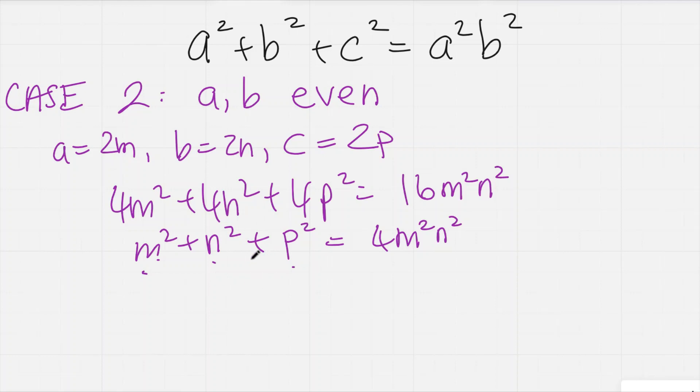And in fact, we can then divide everything by 4. So if I divide this whole equation by 4, I have (m/2)² + (n/2)² + (p/2)² is equal to m²n². So m is an even number, so m/2 is still an integer, n/2 is an integer, and so is p/2.